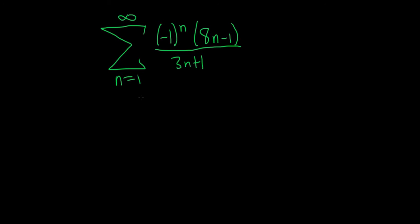We have an infinite series, and we're being asked to determine if it converges or diverges. If you saw this problem and you noticed this negative 1 to the n, the first thing that you might try is the alternating series test. Let's go ahead and try that.